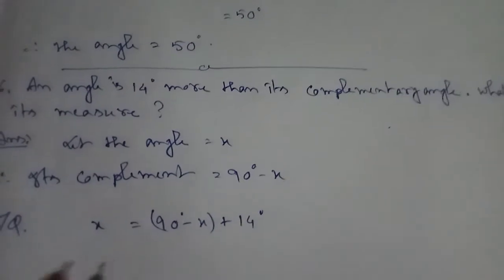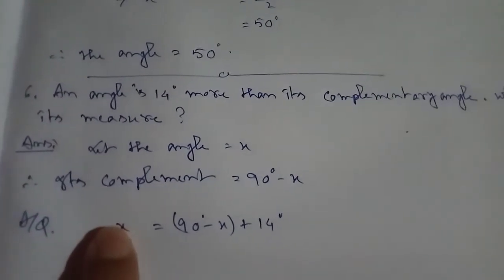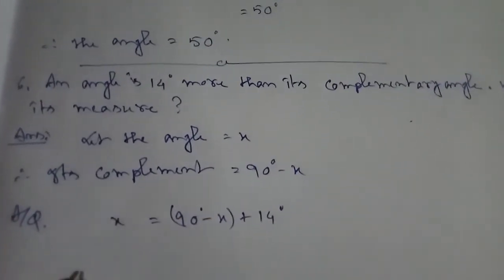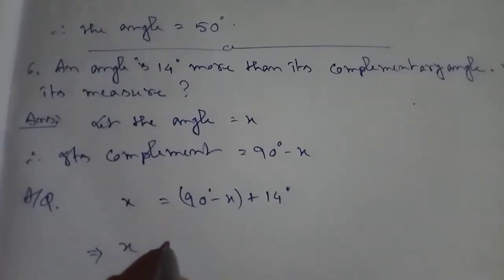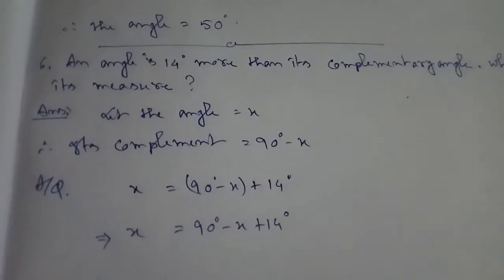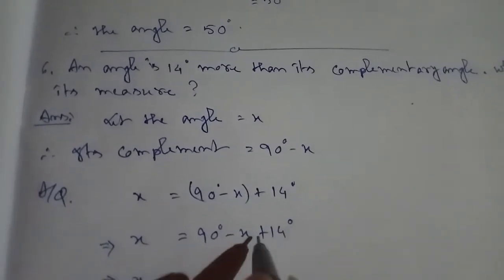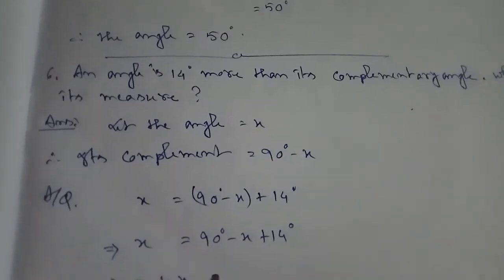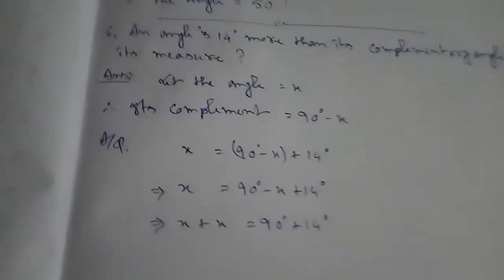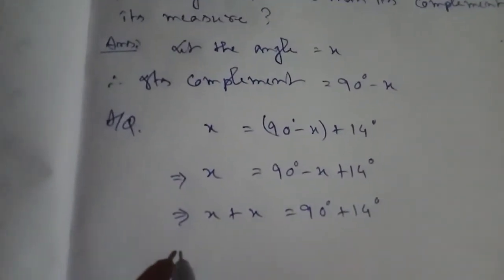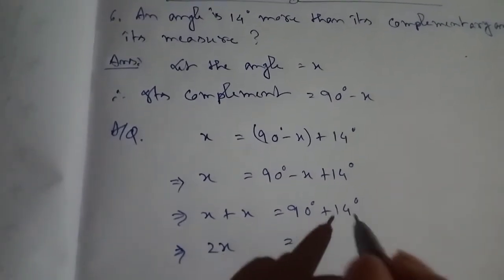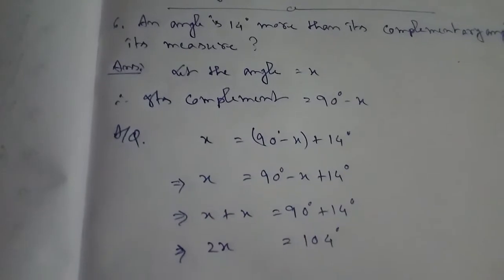Since the angle is 14 degrees more, we add 14 to the other side: x equals 90 minus x plus 14 degrees. Bringing minus x to this side gives x plus x equals 90 plus 14 degrees, so 2x equals 104 degrees.